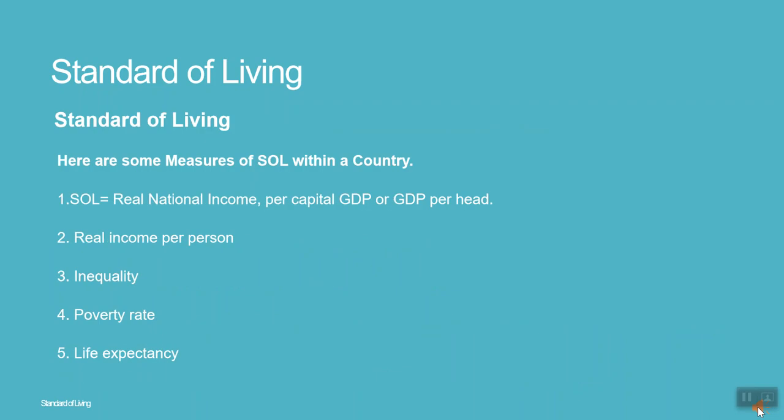Here are some measures of SOL within a country: 1. SOL equals real national income, per capita GDP or GDP per head. 2. Real income per person. 3. Inequality. 4. Poverty rate. 5. Life expectancy.